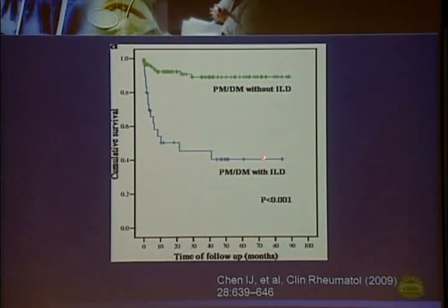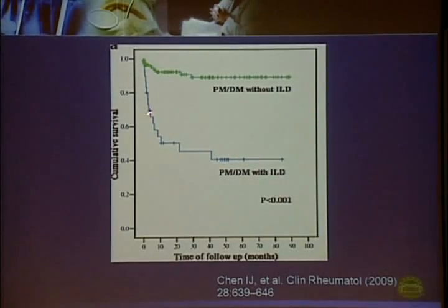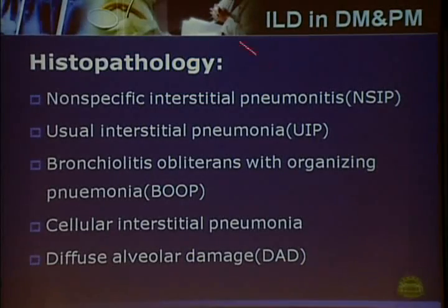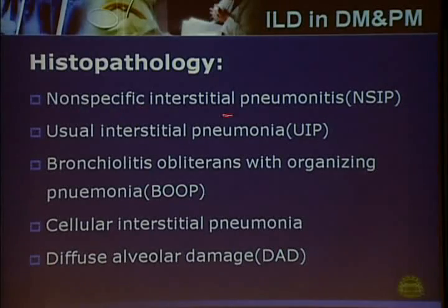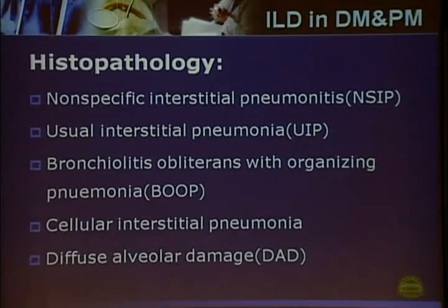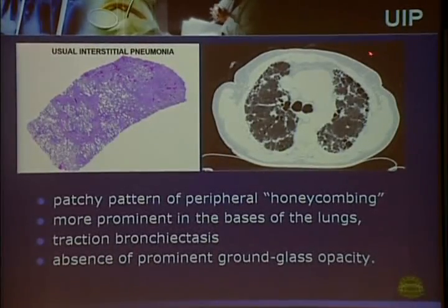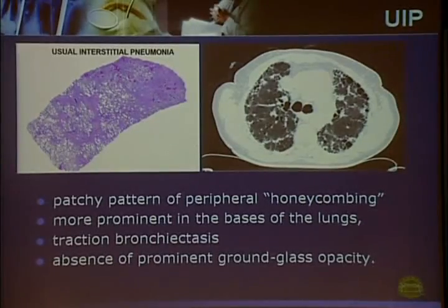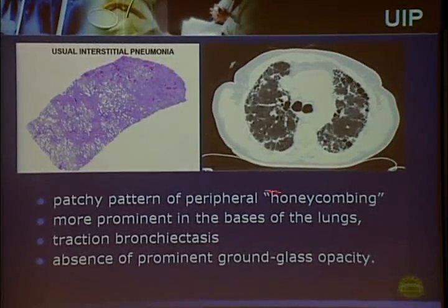A study from Taiwan also shows that myositis patients with interstitial lung disease have worse prognosis than those without. Key prognostic factors include histopathological subtypes: non-specific interstitial pneumonia (NSIP), usual interstitial pneumonia (UIP), organizing pneumonia, and diffuse alveolar damage. UIP usually responds poorly to corticosteroid treatment and has a bad prognosis.